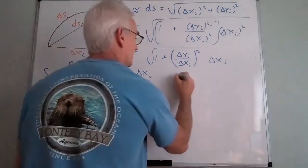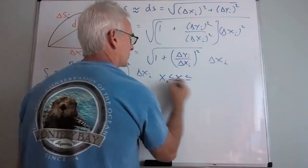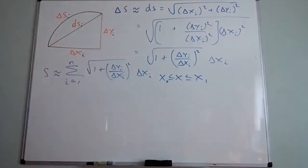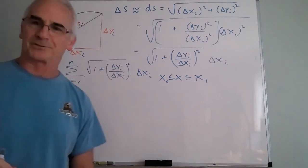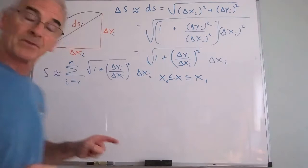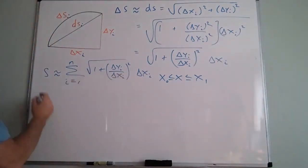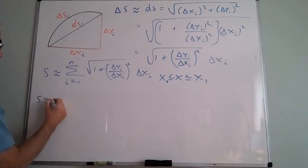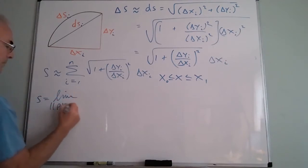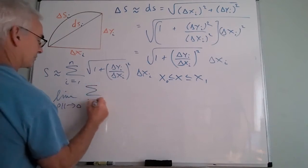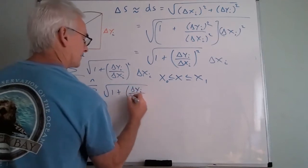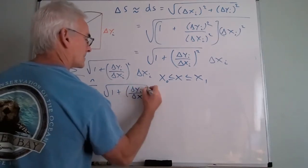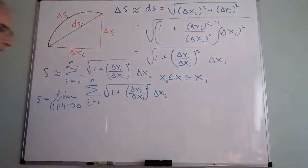The whole arc length can be estimated by the sum of all n of these line segments. Summing from x₀ to x₁, this looks very much like a Riemann sum. Since there's a Δx, I can take the limit — s equals the limit as the norm of the partition goes to zero of this quantity.